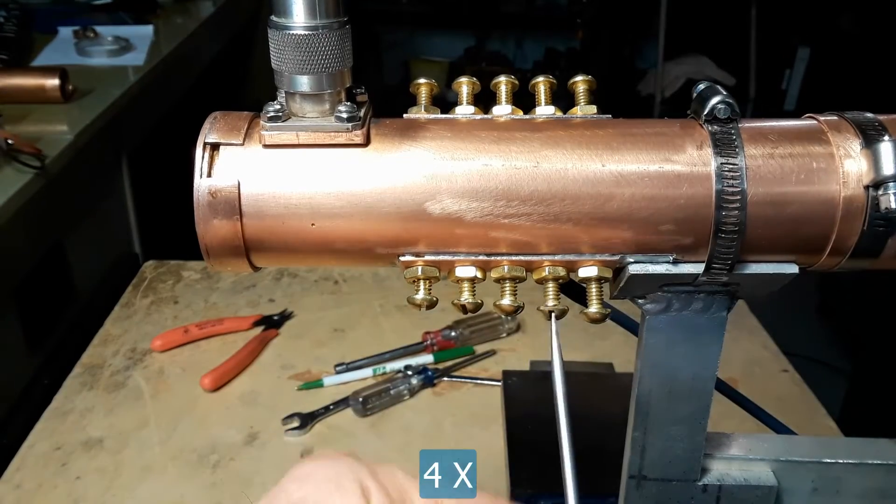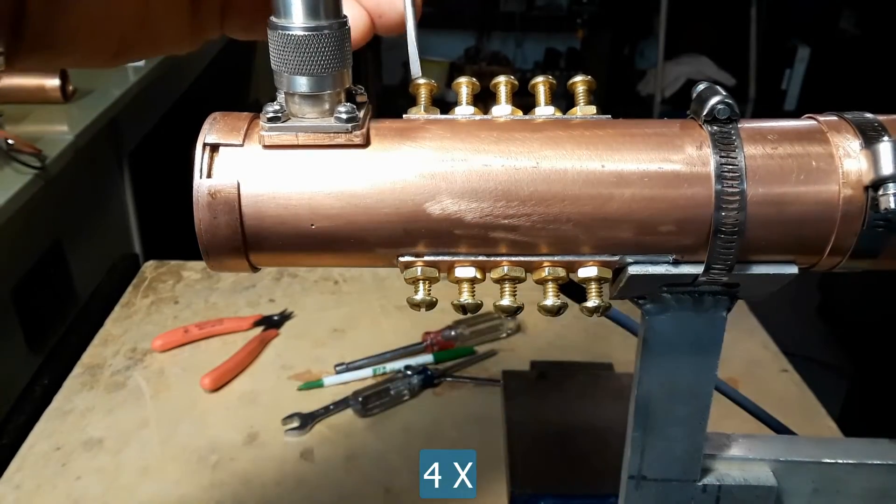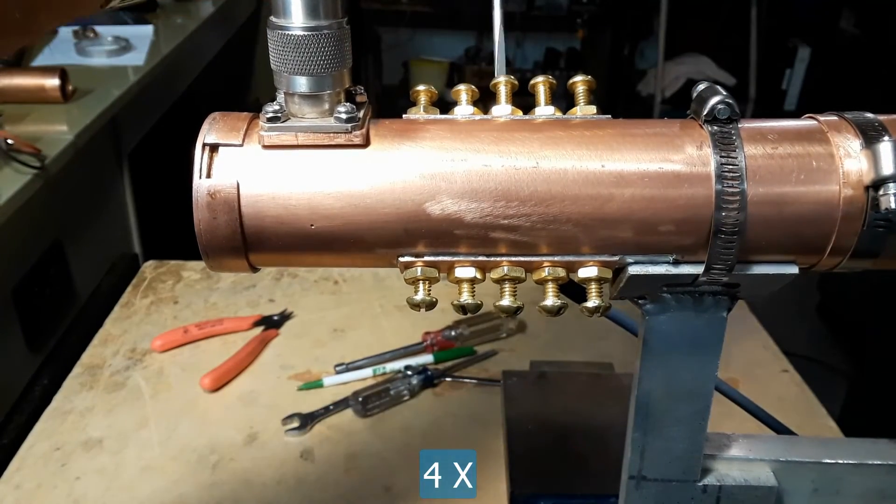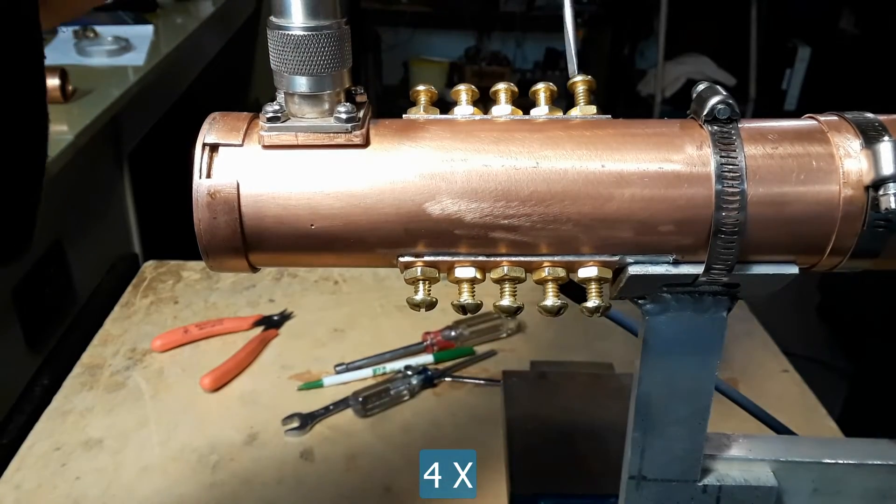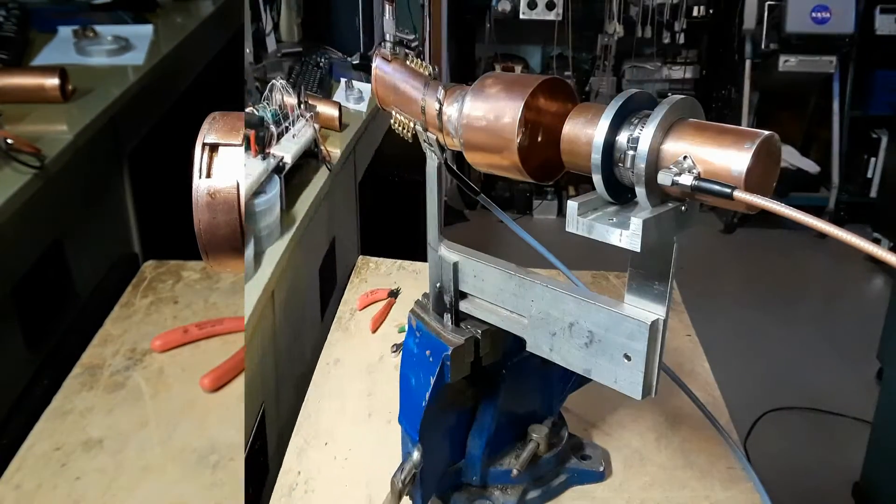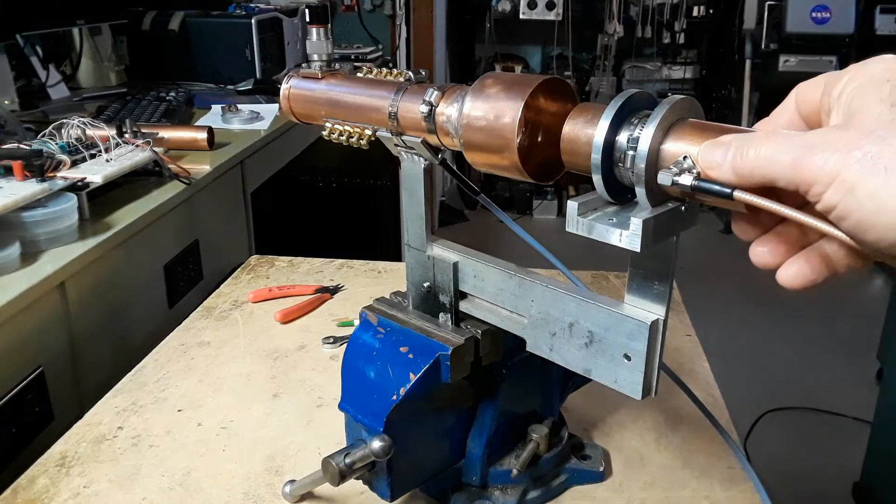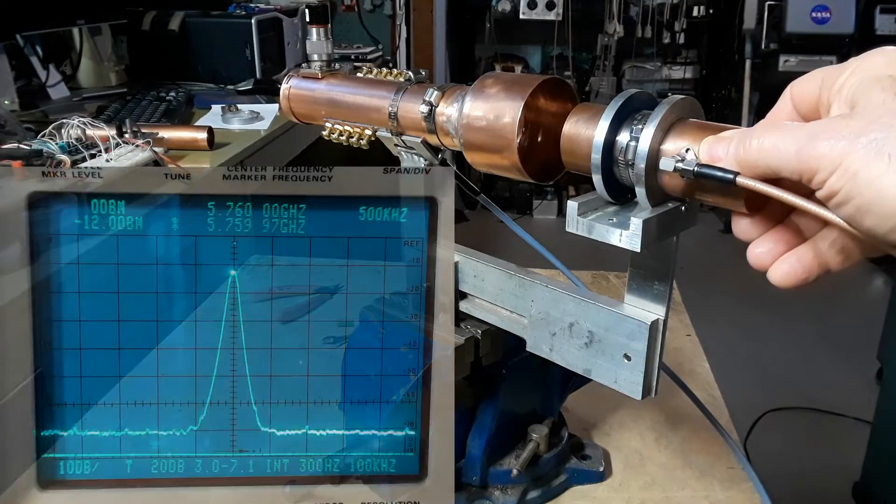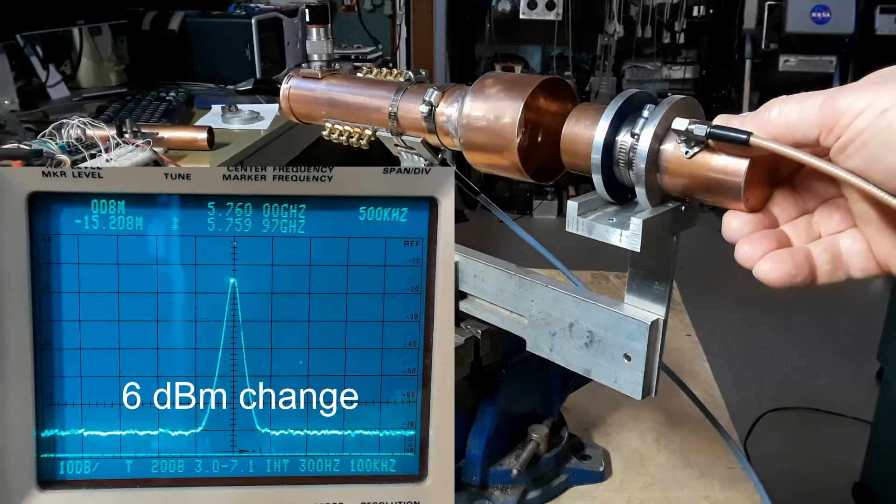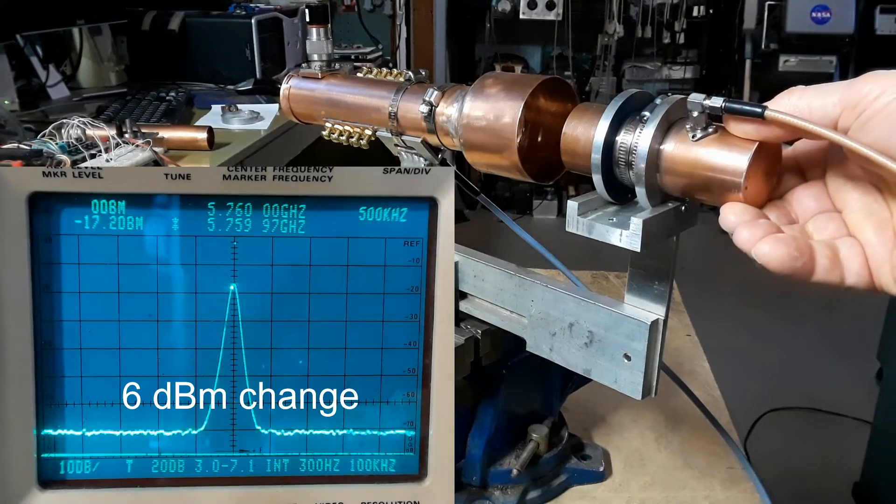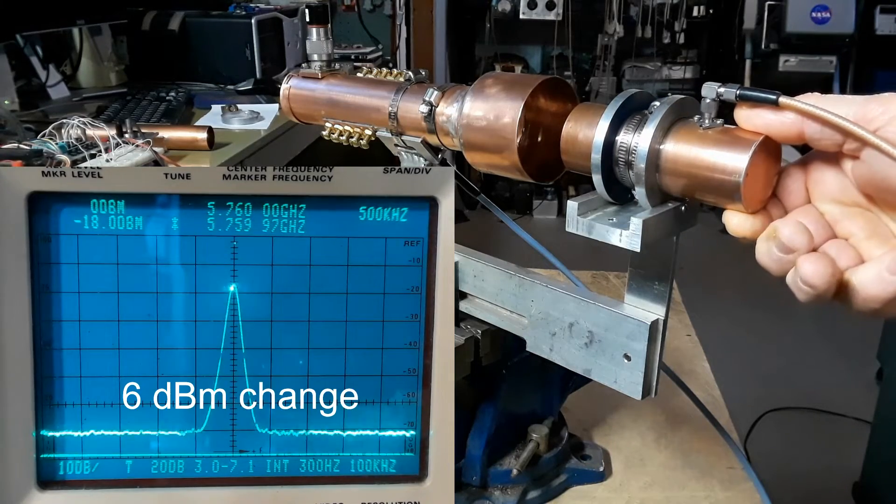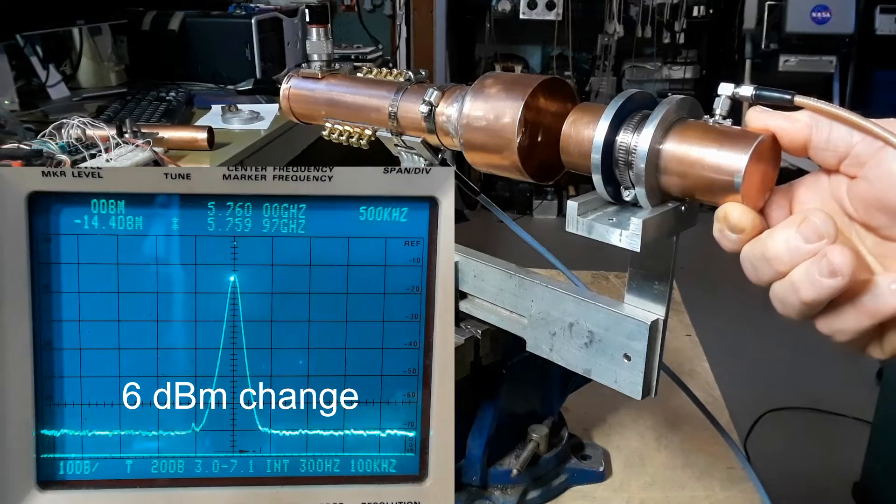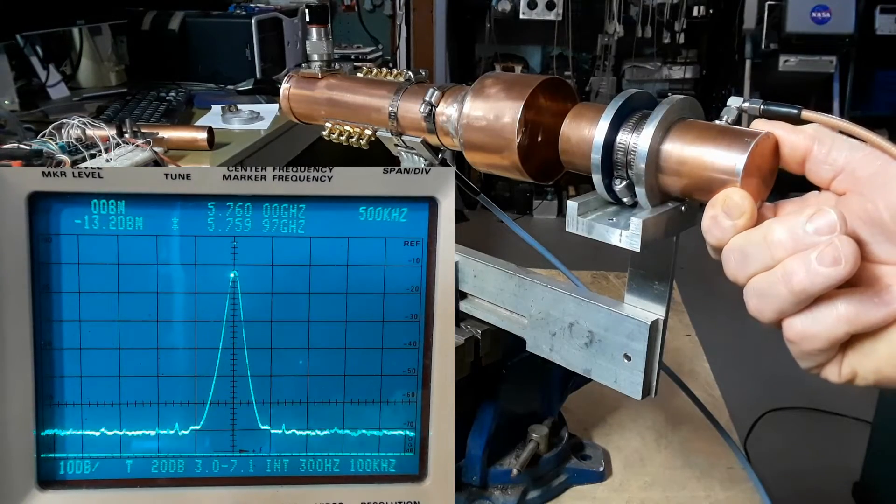So twisting the bolts a little bit farther and see what happens. Once again we rotate the test antenna and this time we're getting somewhere. We're getting a change of only 6 dBm. Better than before.